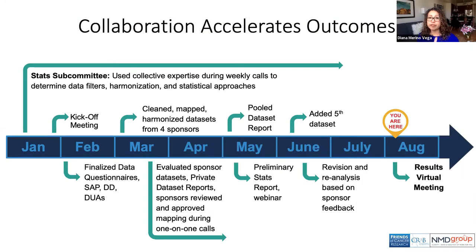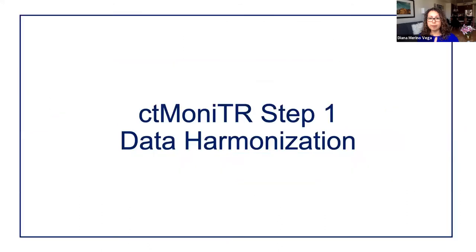This project has generated results very quickly, and this is largely due to the invaluable support of our partners. Not only did they commit data, but they also provided their time and expertise at every step of the journey. The statistical experts met several times a month, and all partners met in January and May to finalize the statistical analysis plan and review the preliminary results respectively. Here you can see the steps we took and the pace at which we progressed. I will start by describing some of the challenges we faced with the disparate data sets we received and how we were able to find solutions for data harmonization.